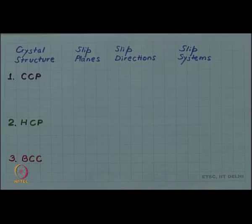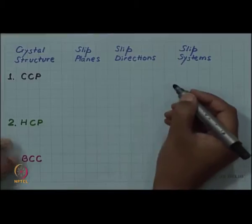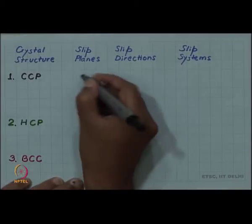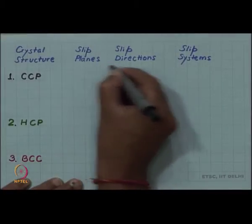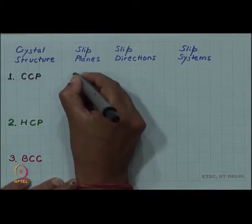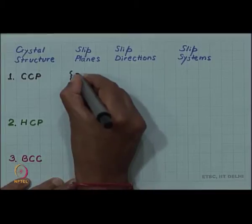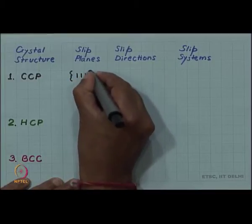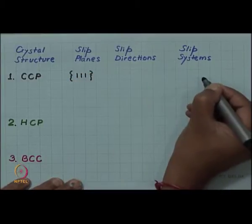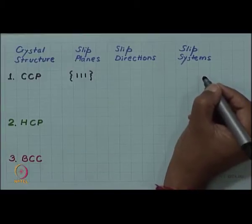For cubic close-packed structure as you know CCP, the slip planes, if you want the close-packed planes in the cubic close-packed structure are of the {111} type.